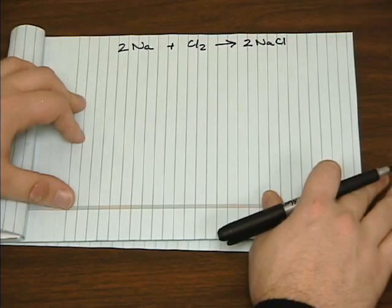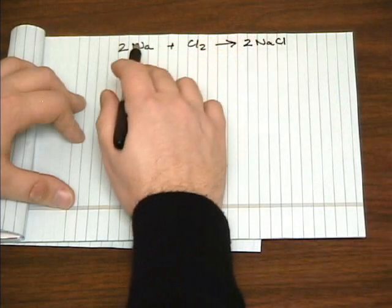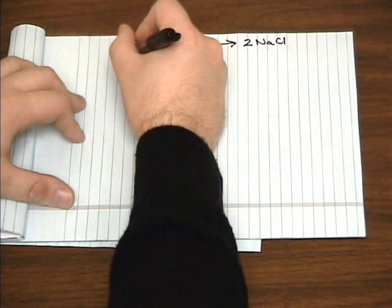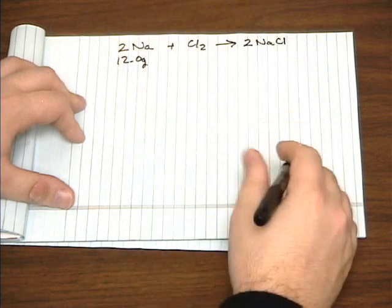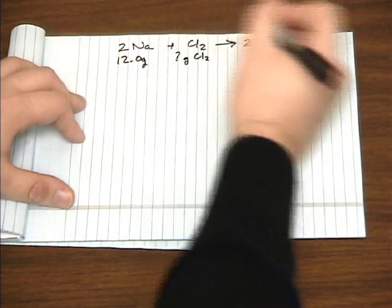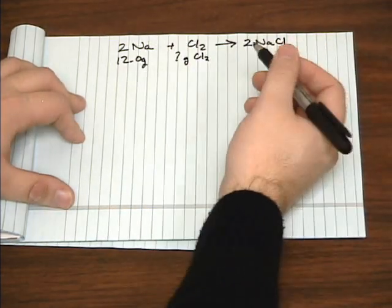Let's look at another example. Let's look at the reaction between sodium and chlorine to give you sodium chloride. Let's say we have 12 grams of sodium. Let's try to figure out how many grams of chlorine we need to react with all 12 grams.